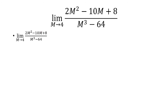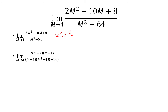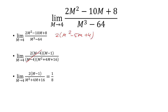Last one: if I plug in m equals 4, we get 0 over 0, so factor out the top. You can pull out a 2, and then we'll factor further as m minus 4 times m minus 1. The denominator is m minus 4 times m squared plus 4m plus 16. The m minus 4s cancel. Plug in m equals 4 and get 1 eighth as our answer.